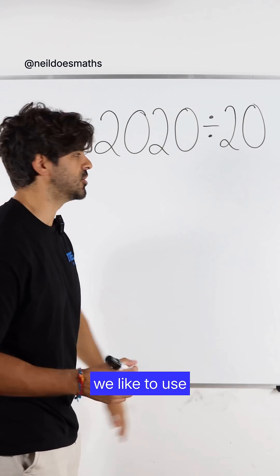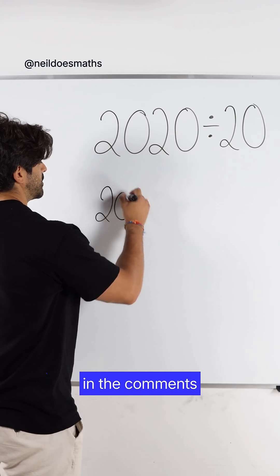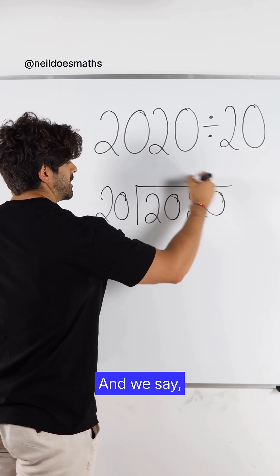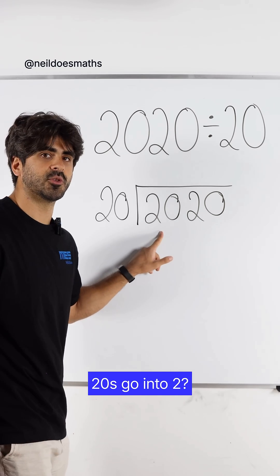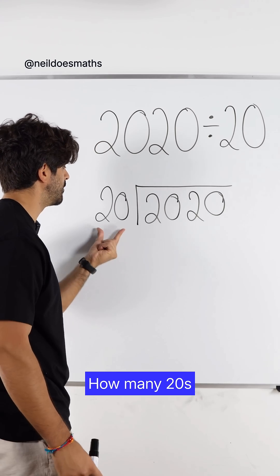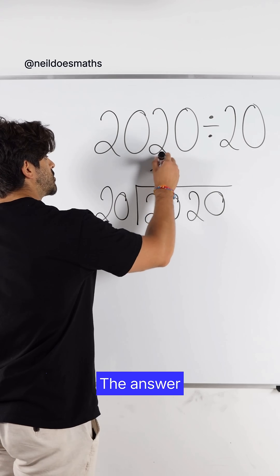Now, to do this division, we like to use the bus stop method. Let me know in the comments what you call it. So, this looks like a bus stop. And we say, all right, how many 20s go into 2? It doesn't. So, we say 20 into 20. How many 20s go into 20? The answer is 1.